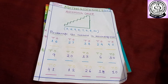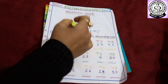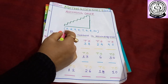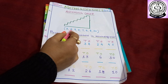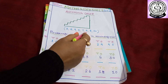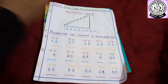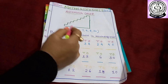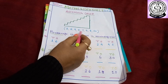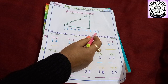Here I am with my maths worksheet on ascending order. Here you can see I have written some numbers: 3, 6, 9, 5, 7, 4, 8, and 10. All numbers are one digit except 10.